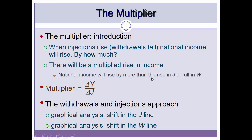National income appears to rise by more than the rise in injections (J) or fall in withdrawals (W). So in other words, one pound injected into the economy, over time through the circulation of income, leads to a greater amount of income generation. One pound of income in the form of sales received by a firm implies income in the form of wages to employees, and then that income goes into tax payments, savings, and spending on imported goods. The circular flow creates this multiplier effect on income.